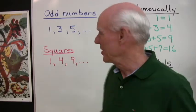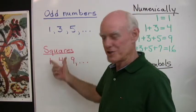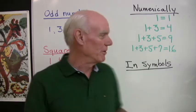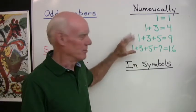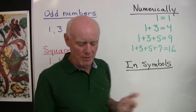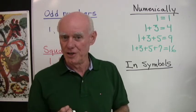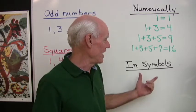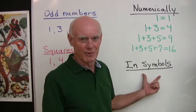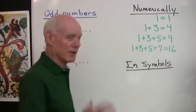Okay, you're going to like this. Here we have our sequence of odd numbers and our sequence of squares, and we've written the relationship numerically. But remember, we want to show it numerically, in words, visually, and in symbols. So what we're going to do in this video is write this relationship in symbols.